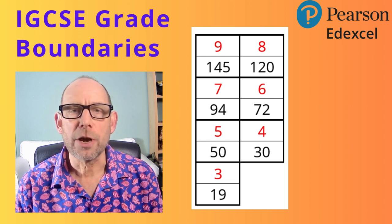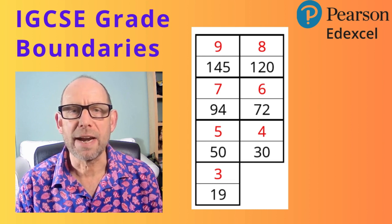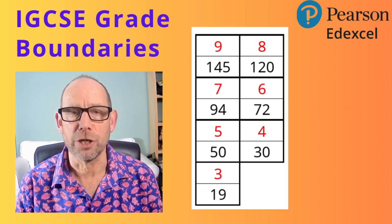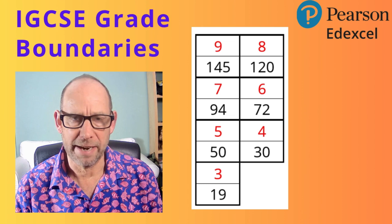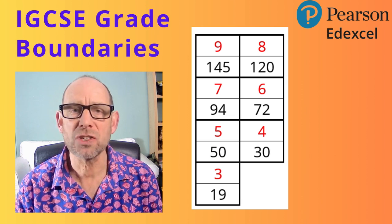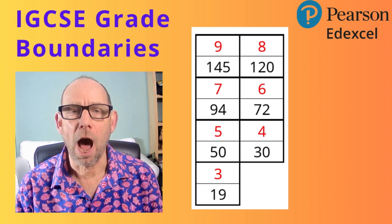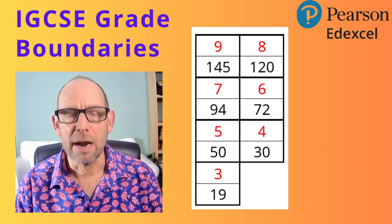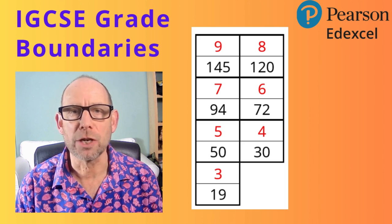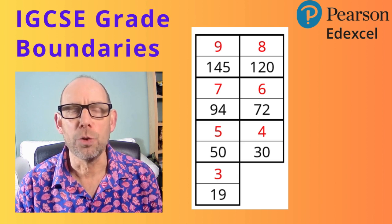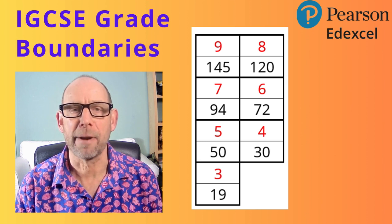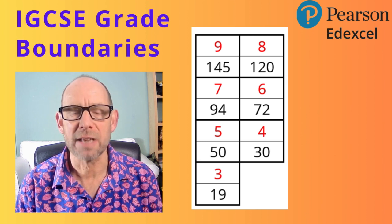Similarly, you would need a total of 120 marks to get a grade 8. So you'd be looking at about 60 marks on each paper on average — that's 60% on the first paper, 60% on the second. You can get a whole load of marks on one paper and very few on the other, as long as your two marks add to 120 or more, you will get that grade 8, or at least that's the average grade boundary for the last 10 years.